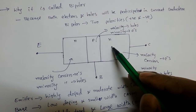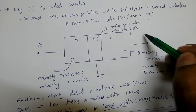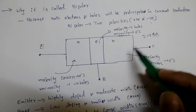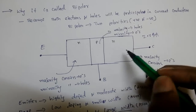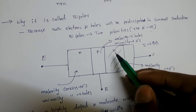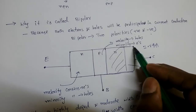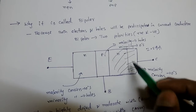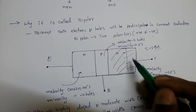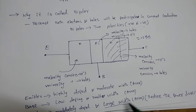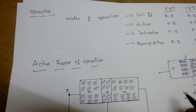When the collector gathers more electrons, current increases, and power (I×V) increases, causing heat to rise. If the area is small, the temperature becomes very high. By spreading the collector area, the heat is also spread, reducing the effective temperature. This is why the collector width is made very large. Next we look at the operating modes of the BJT.